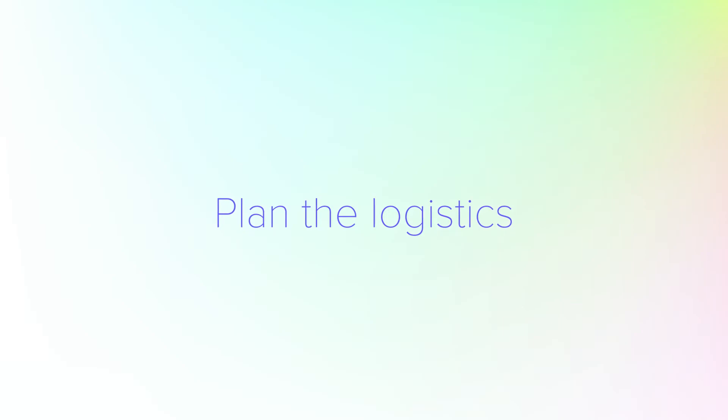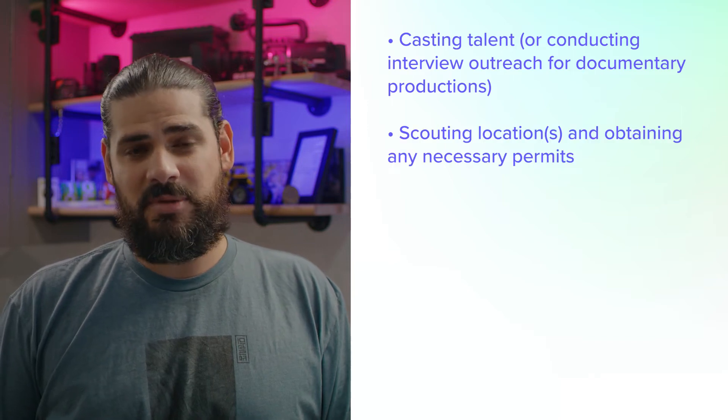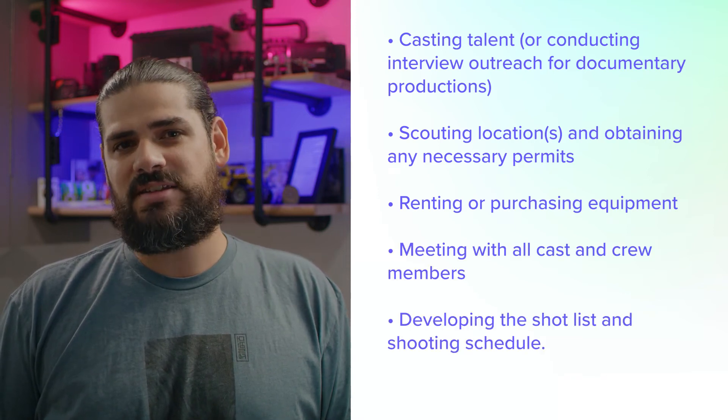Once you've got your concept and written your script, bring your creative vision to life by sketching out storyboards. This will help you identify all the different shots that go into each scene and weed out shots that don't work. Once your storyboards are solid, outline a shot list with specific details on who and what each shot needs to capture. Then lock down all the logistical details so things go smoothly the day of your shoot — this is a great time to bring budget into the equation. Tasks to plan include casting talent, scouting locations and obtaining permits, renting or purchasing equipment, meeting with cast and crew, and developing the shot list and shooting schedule.